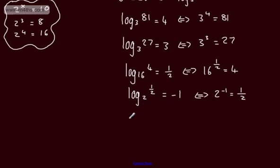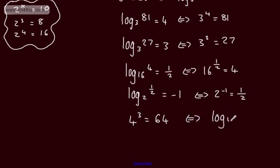Let's write 4 to the power of 3. 4 to the power of 3 equals 64. Therefore, we can write that log to the base 4 of 64 equals 3. So log to the base 4 of 64 is 3, and 4 to the third is 64 — those are the equivalent statements.